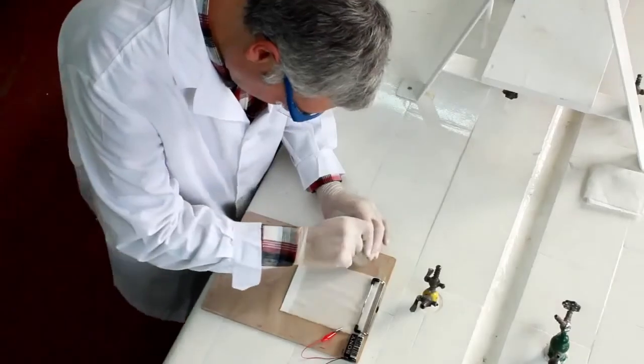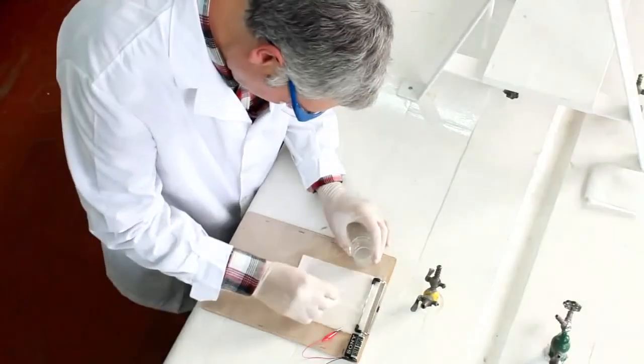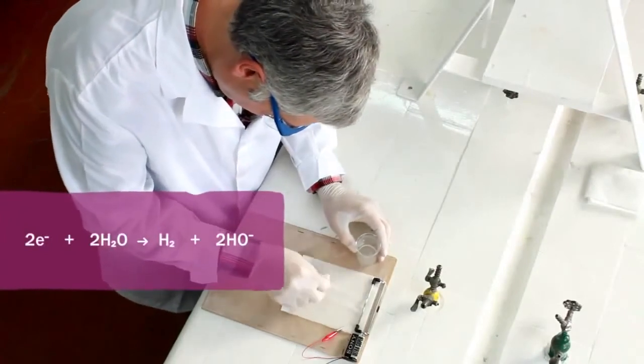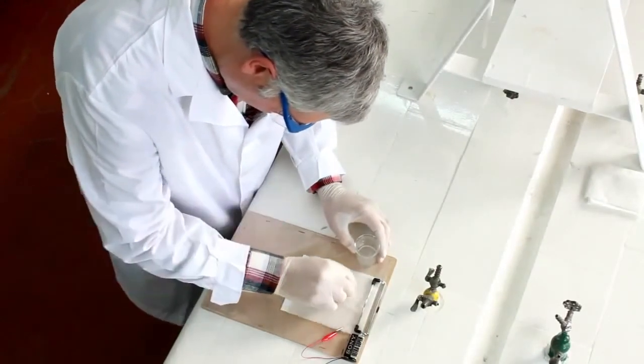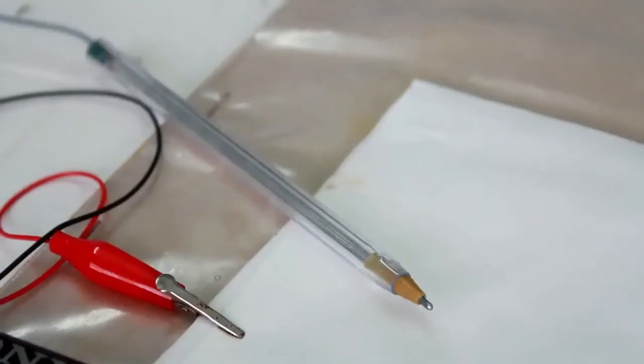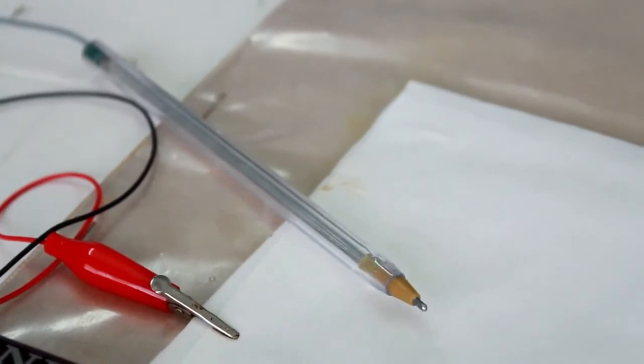En el cátodo, los electrones que emergen de la pila y circulan a través de la lapicera electroquímica obligan a que el agua de la solución se reduzca a hidrógeno y a la vez formen iones hidróxidos, aumentando la basicidad del sistema. La fenolftaleína pasa de incoloro a fucsia, formándose un trazo coloreado.